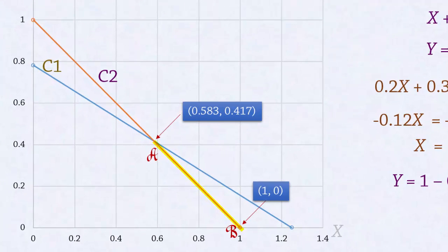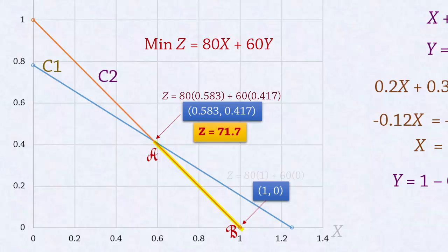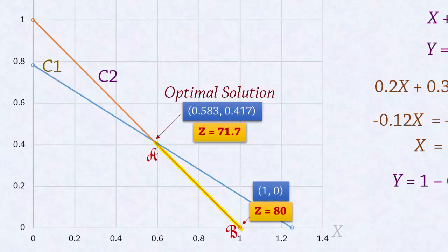Since the objective is to minimize 80x plus 60y, the value of the objective function is 71.7 at point A and 80 at point B. So point A gives the optimal solution with x equals 0.583 and y equals 0.417.